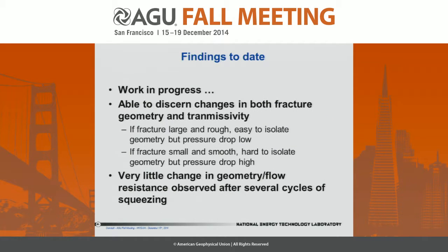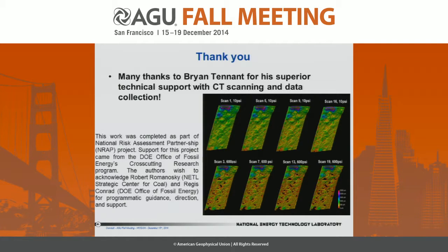We were able to discern changes in fracture geometry and transmissivity within these cores — just not at the same time, which was frustrating. If the fracture was large and rough, it was easy to isolate geometry but the pressure drop was too small to measure. If the fracture was smooth and small, it was hard to isolate geometry from the CT scans. We're looking for the happy medium for ongoing tests. We did confirm the well-known result that there was very little change in geometry or flow after several cycles of squeezing. Thanks to Brian Tennant specifically for helping with the CT scanning work.